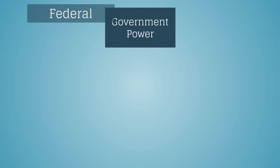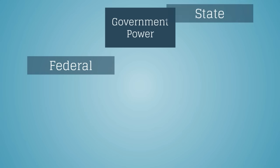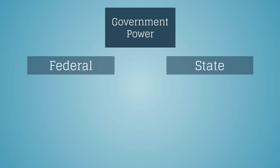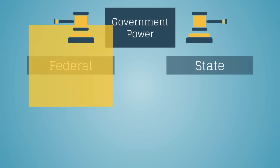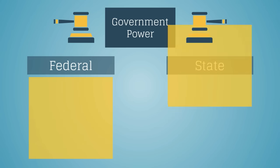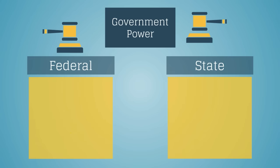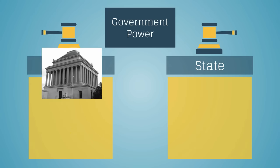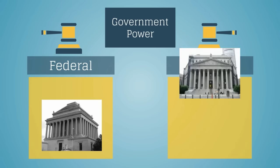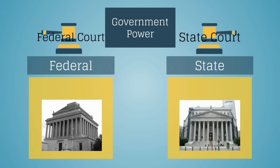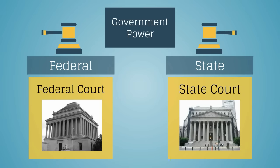Because of federalism, there are both federal and state legal systems in the United States. That's why, in the United States, there are both federal and state courts.